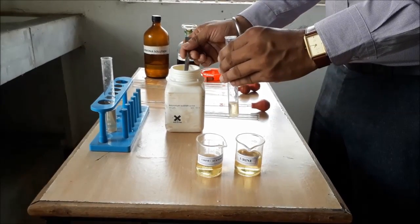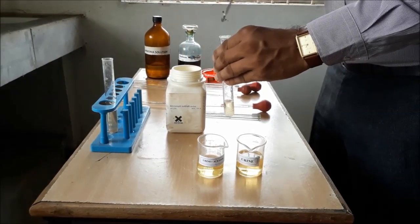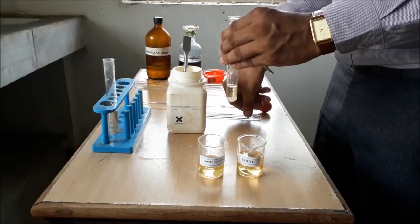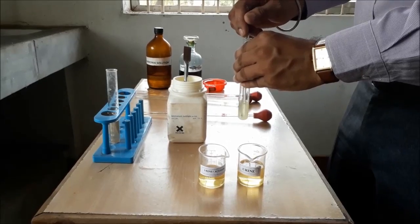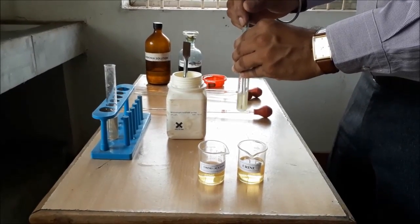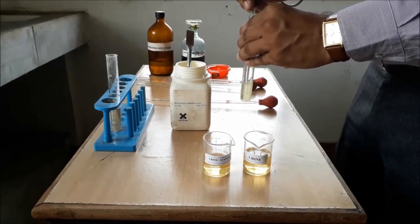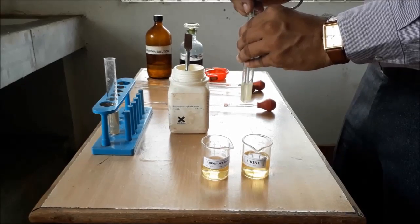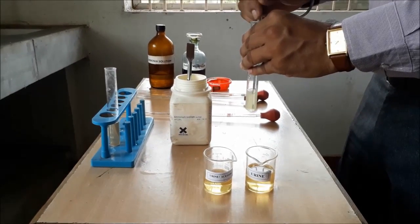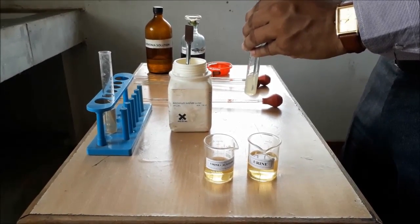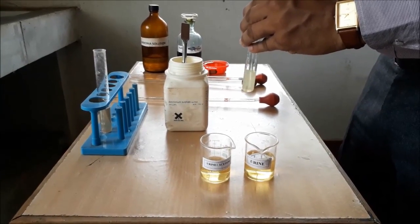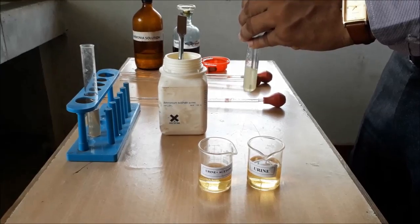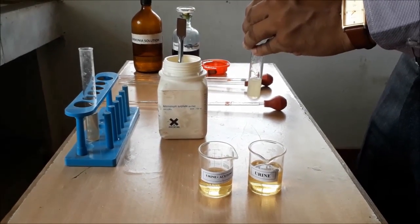After transferring it into the test tube, add ammonium sulphate slowly to the test tube and start dissolving it with the help of glass rod. We have to dissolve the ammonium sulphate till a saturated solution is achieved, means we have to add spatula of ammonium sulphate to the test tube having urine sample till it stops to dissolve.